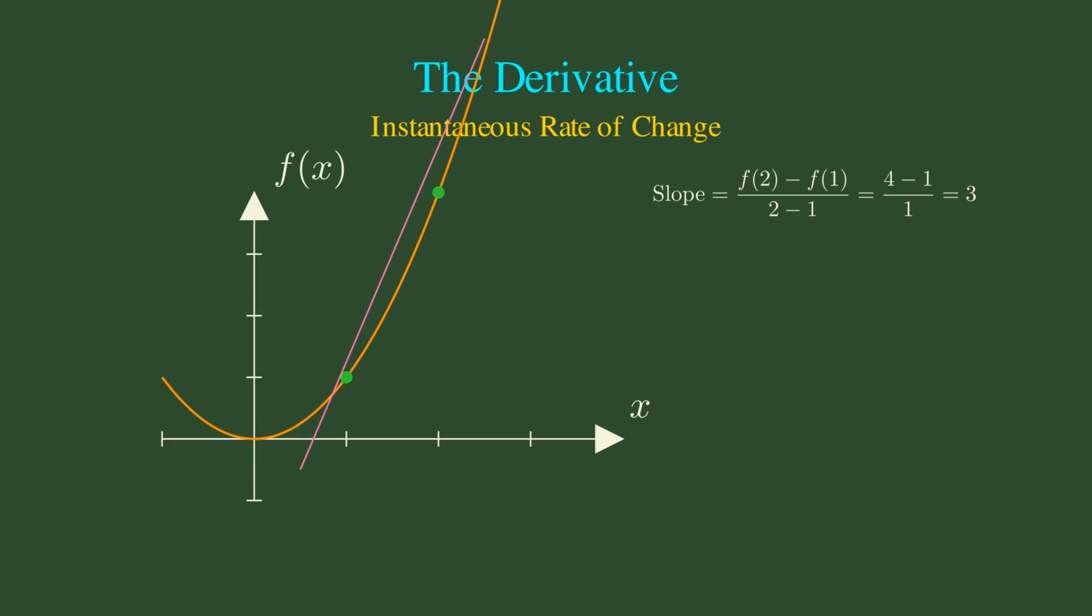This limiting process gives us the derivative, f prime of X equals the limit as H approaches 0 of f(x + h) - f(x), all divided by h.